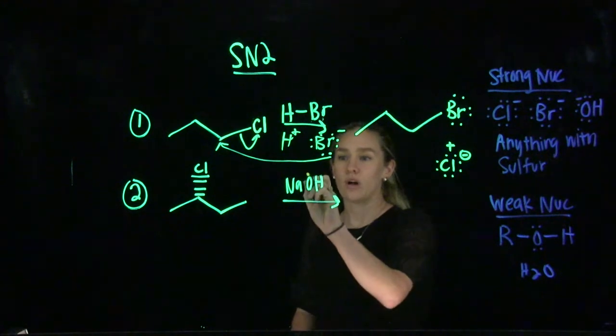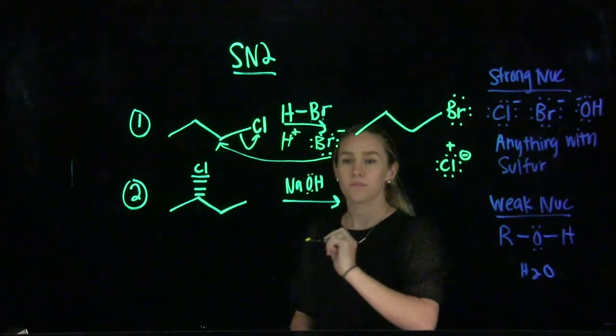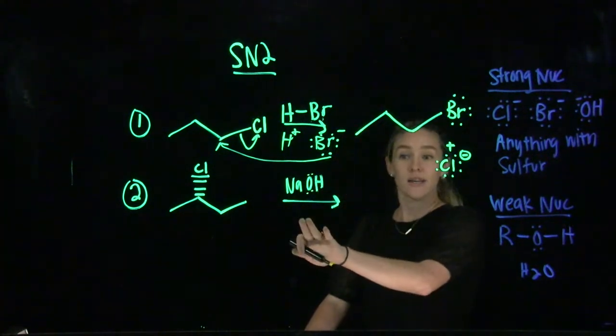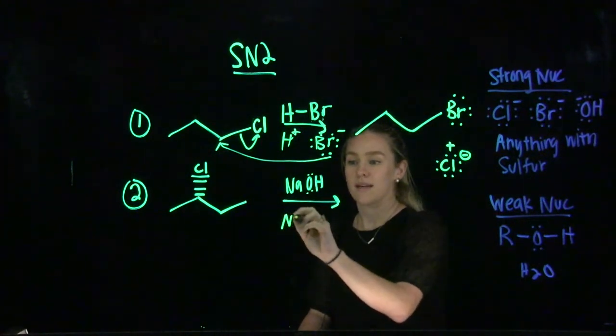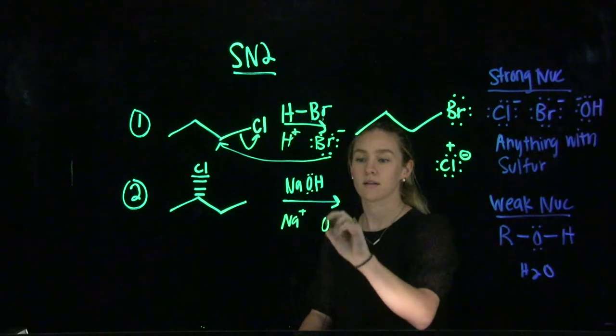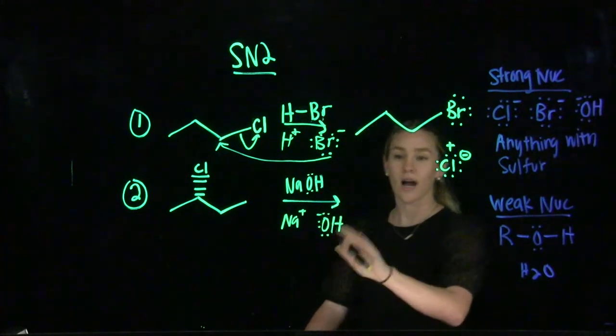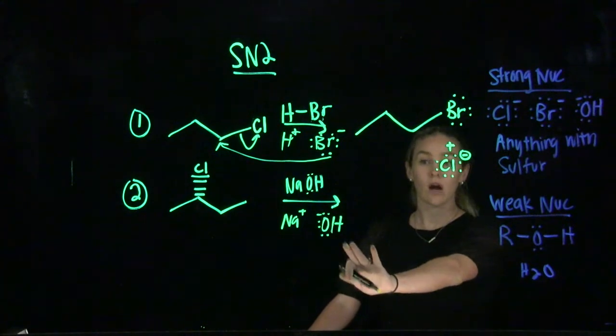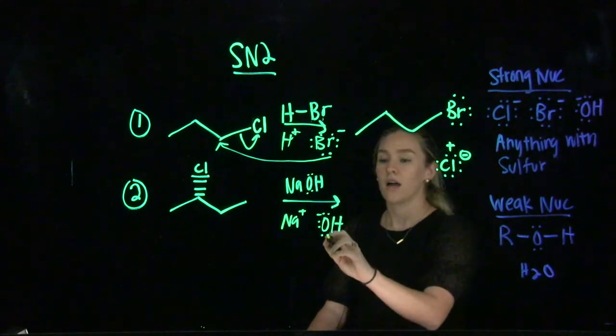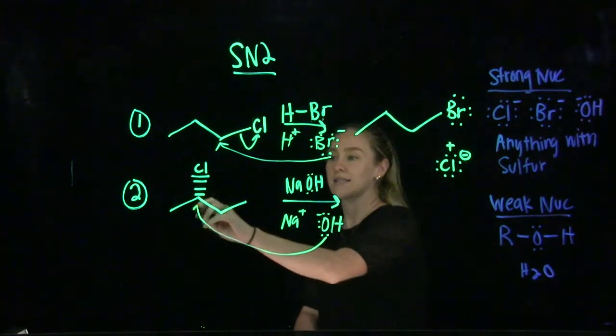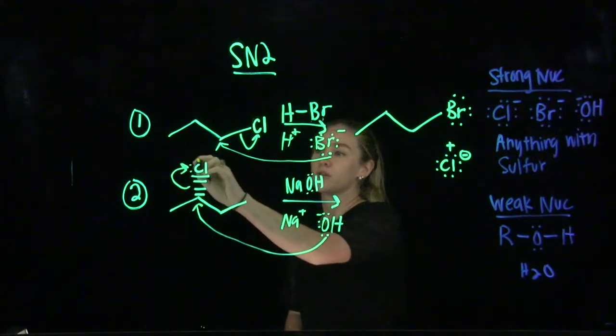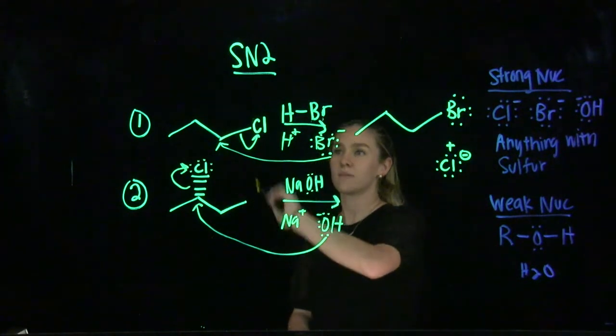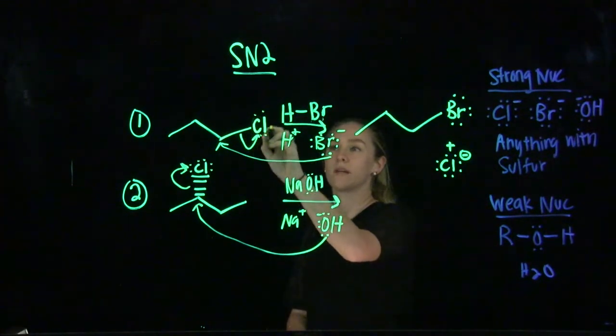The reaction overall is the exact same. NaOH is a strong base. That means it's going to break up into Na plus and OH minus. Our hydroxide ion is going to be our nucleophile. Your nucleophile attacks the electrophile all at the same time. You have your leaving group leaving.